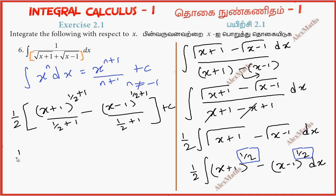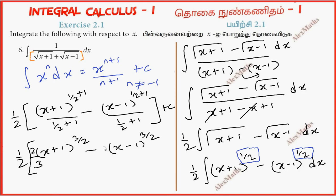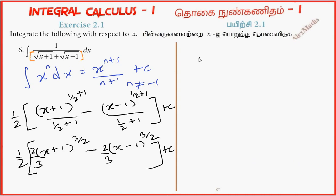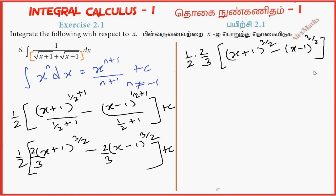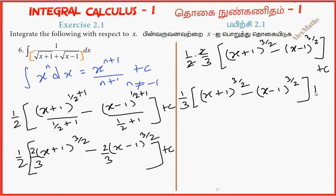This gives x plus 1 whole power 3 by 2, divided by 3 by 2, minus x minus 1 whole power 3 by 2, divided by 3 by 2, plus C. So the final answer is 1 by 3, bracket open, x plus 1 whole power 3 by 2, minus x minus 1 whole power 3 by 2, plus C.